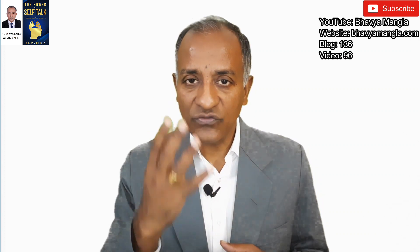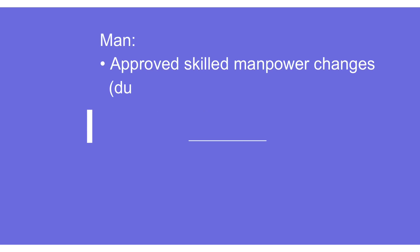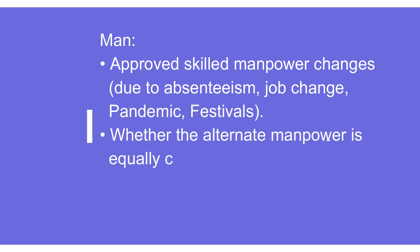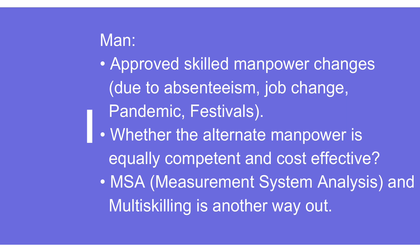Let's start with what exactly is 4M change — the 4Ms: man, machine, material, method. Starting with man: in a particular industry, there is always manpower which is qualified to operate a certain machine. Because of any reason — absenteeism, job change, that person being occupied in some other process, pandemic, or festival — that person is not available. So we need to use an alternate person for a temporary timeframe, and we need to ensure that person is competent to carry out that particular activity.